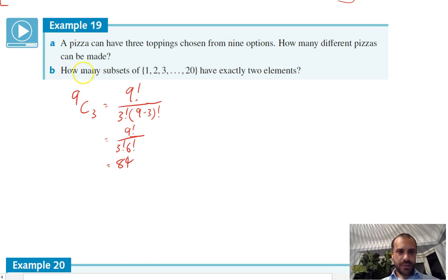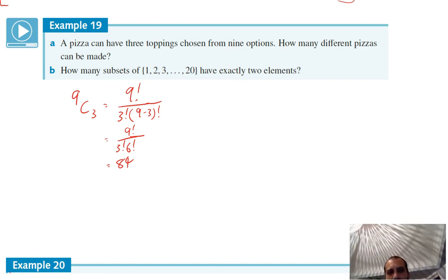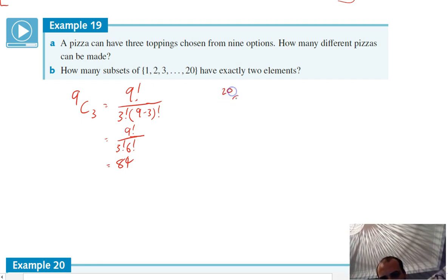Part B here: how many subsets of one, two, three, all the numbers from one to 20, have exactly two elements? In other words, how many groups of two can you select from 20? It's just 20 choose two, which is 20 factorial over two factorial, and then 20 minus two, which is 18 factorial. It might look like you need a calculator. But 20 factorial divided by 18 factorial is 20 times 19.